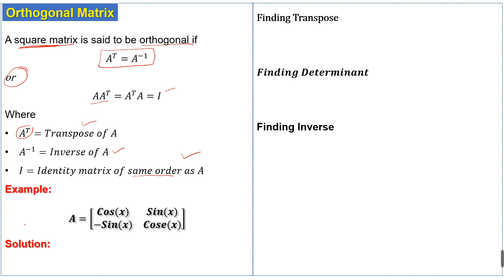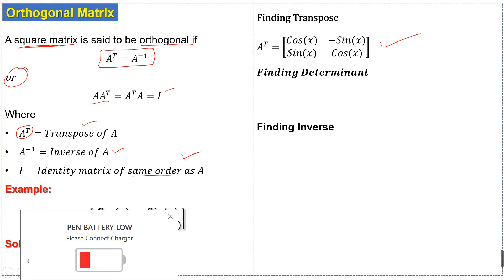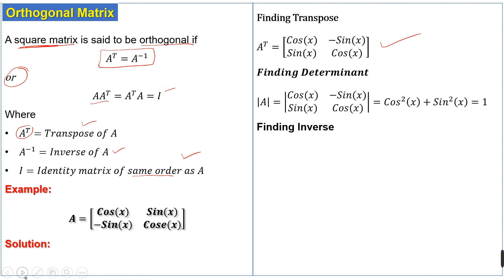Now we have an example. The matrix A is equal to [cos x, sin x; -sin x, cos x]. First, we find the transpose of the matrix A. We find the transpose of matrix A, which gives us this result.